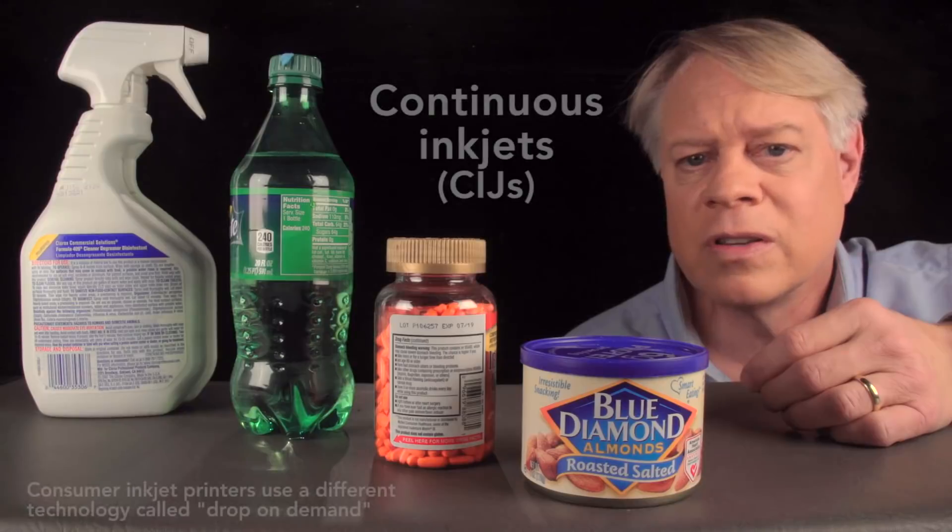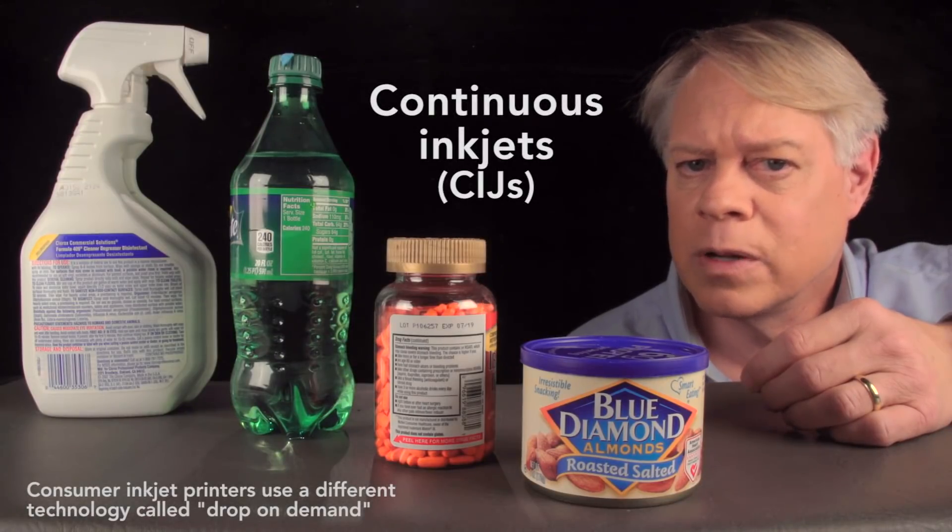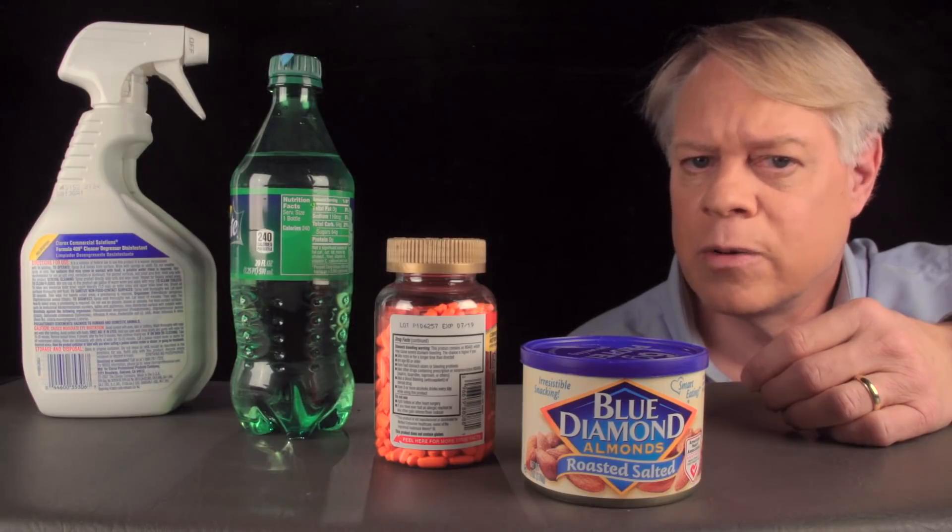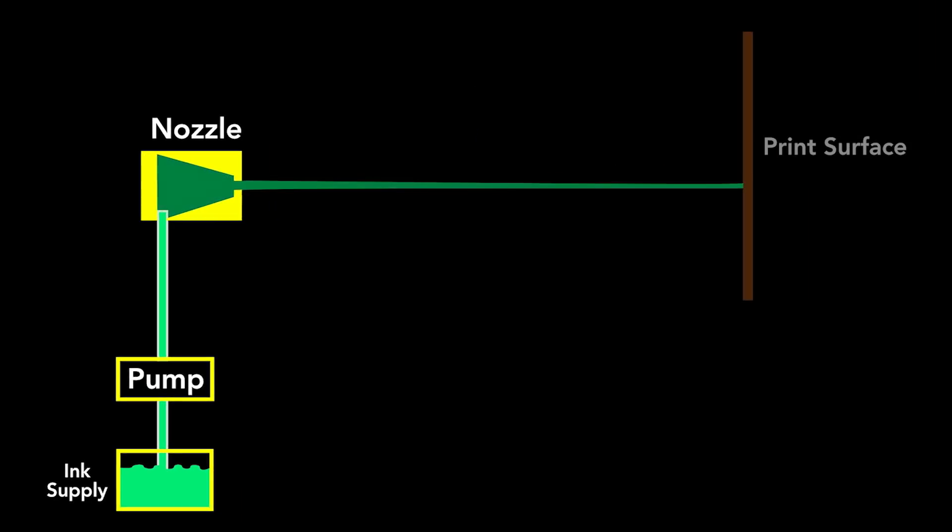These industrial printers, known as continuous inkjets or CIJs, create precision droplets using tapping to break a jet into droplets. Ink from a reservoir is pumped through a nozzle. The nozzle sprays a jet of ink onto a surface, a box, or a container. The jet's so powerful that the printer can print in any direction, from the top as I showed earlier, or horizontally as shown here.